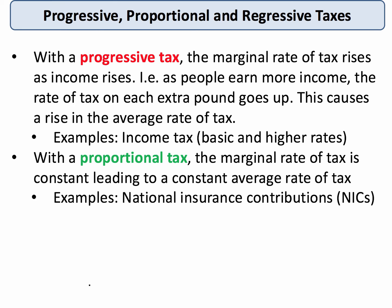With a proportional tax, the marginal tax is constant, so the average rate of tax stays pretty much the same. The closest example we probably come to in the UK is national insurance contributions, although lower income earners don't pay national insurance contributions below a certain income threshold, and there are slightly higher contributions at the top end. But national insurance is pretty close to being a proportional tax.